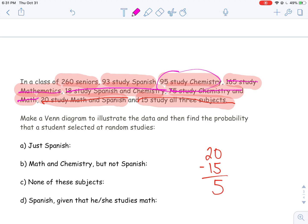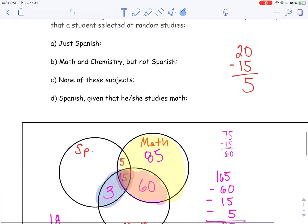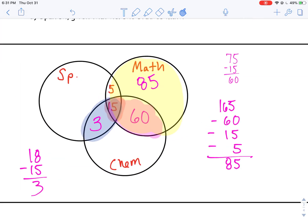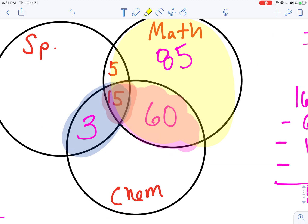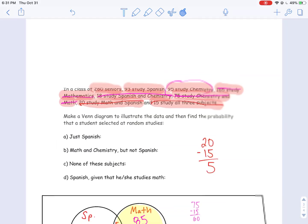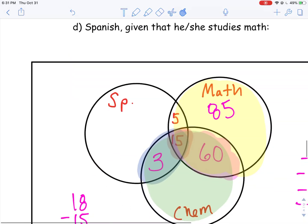Now I have 95 who study Chemistry. So I'm going to look at my Chemistry Circle. The Chemistry Circle is down here. Now remember, the Chemistry Circle includes all these other people. The people who take Math and Chemistry, the people who take Spanish and Chemistry, the people who take all three. So I'm going to go back up here, and I've got 95 who study Chemistry.